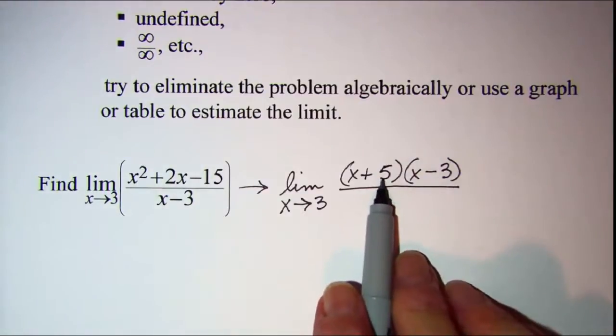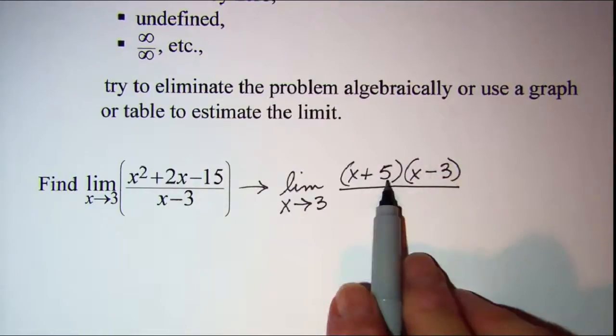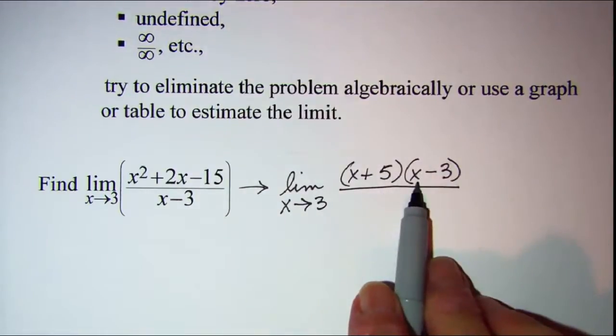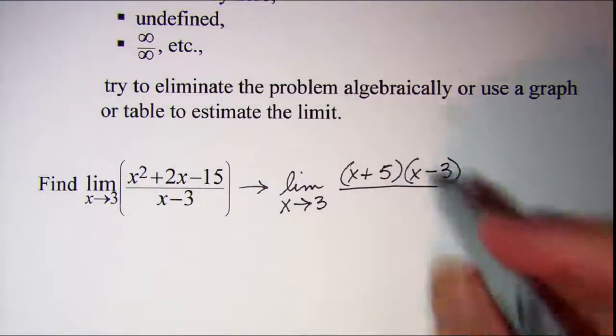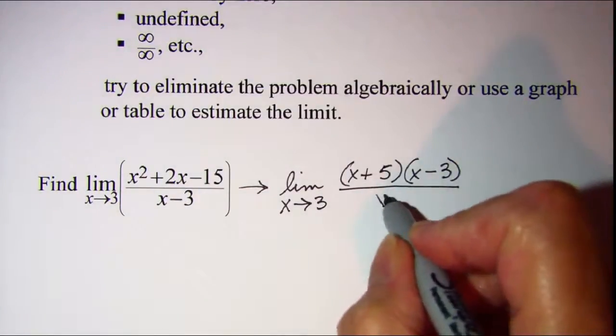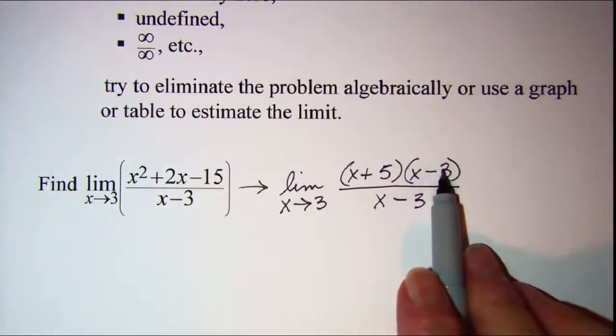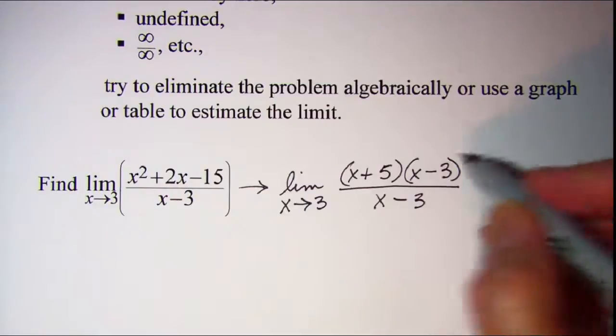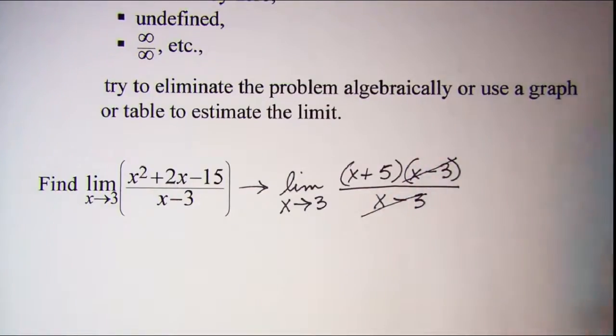So if we check and make sure we get our positive 2x - the outer product is negative 3x, the inner product is 5x. When we add those together we do get 2x. Then the bottom is still x minus 3, but you can see now that this binomial is a factor in the numerator and in the denominator, so it will cancel.